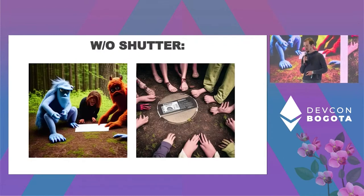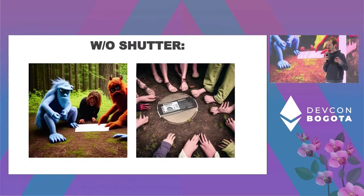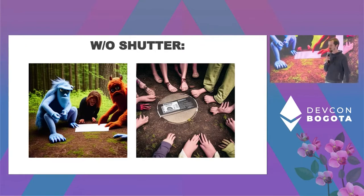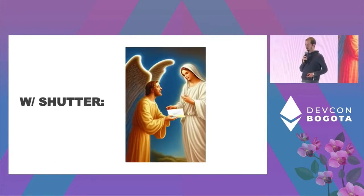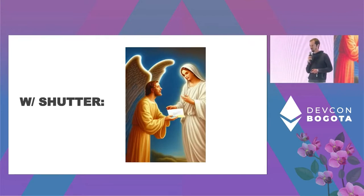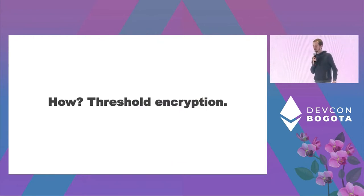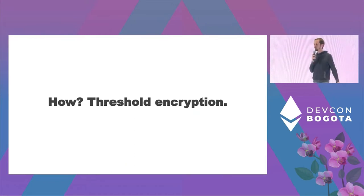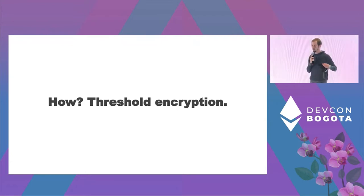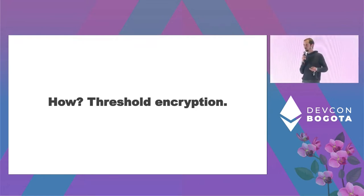We want to go from a world where monsters look at your private information and do bad stuff with it, to something like a more heavenly view where everything is safe and nice. How do we do that? We use threshold encryption, which basically means we have a set of nodes that provide an encryption key. A user can encrypt their message using that key and it's protected from everyone. Only when it's safe to reveal that information will this network of nodes produce the decryption key, and then everyone can see the message.